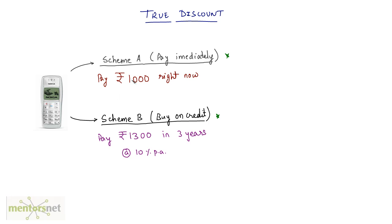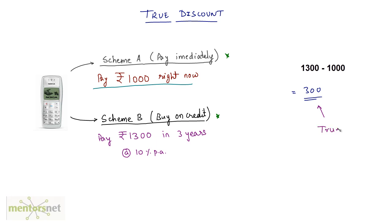You check your wallet, find you have 1000 rupees, so you get the mobile using Scheme A — you pay 1000 rupees right now and take the phone. How much did you save? If you had gone with Scheme B it would have cost you 1300, but you paid just 1000, so you saved 1300 minus 1000, that is 300 rupees. This 300 is actually known as true discount.